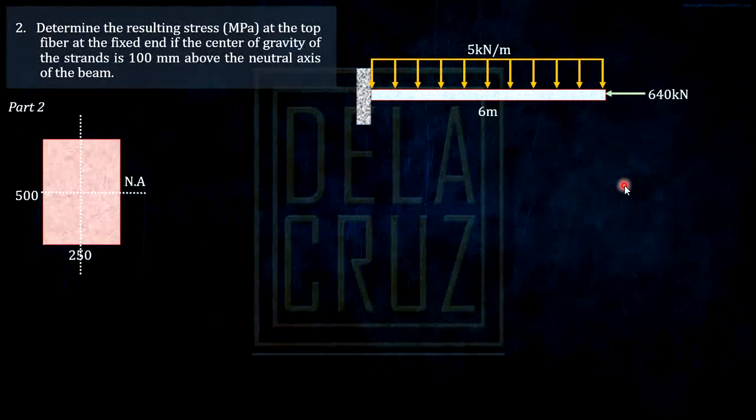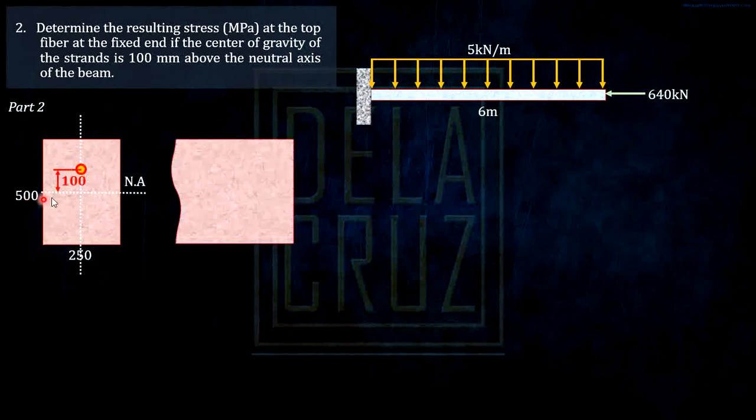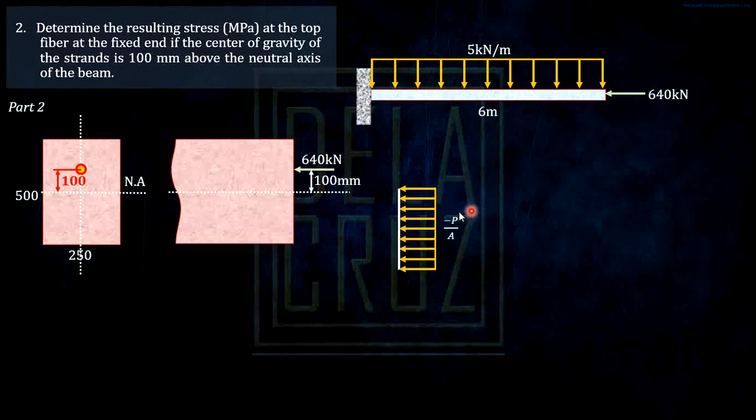Let's proceed for number 2. Determine the stress at the top fiber at the fixed end if the center of gravity of the strands is 100 mm above the neutral axis. The prestressing force is acting at a certain distance, 100 mm from the neutral axis. If we look at this at the side view, this is the prestressing force. What are the stresses? Take note, they said at the top fiber at the fixed end.